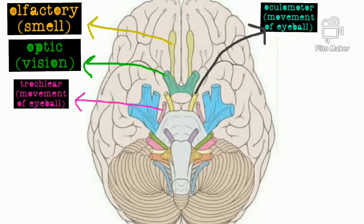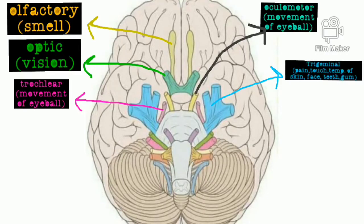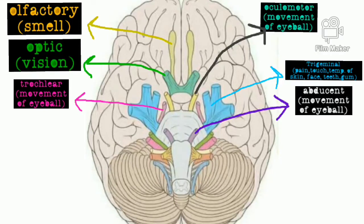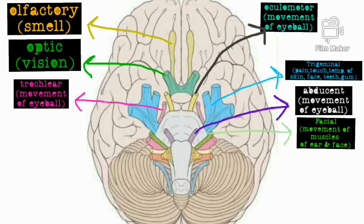Trochlear nerve, whose function is movement of eyeball. Trigeminal nerve, whose function is pain, touch, and temperature of skin, face, teeth, and gums. Abducant nerve, whose function is movement of eyeball. Facial nerve, whose function is movement of muscles of the ear and face.